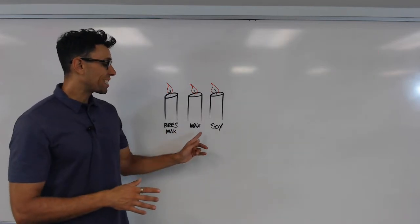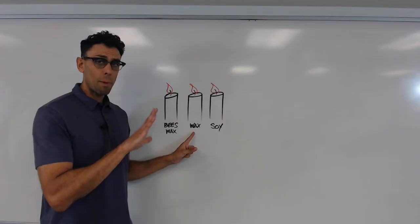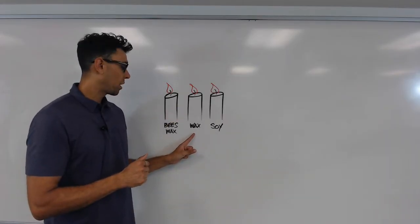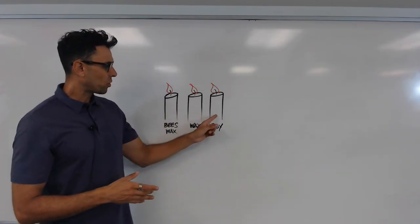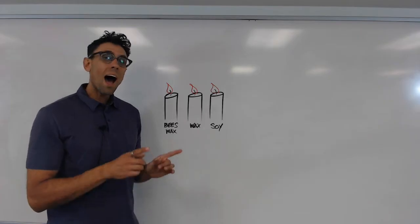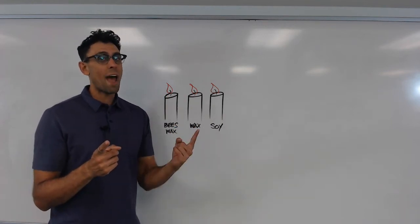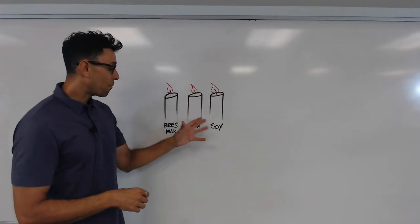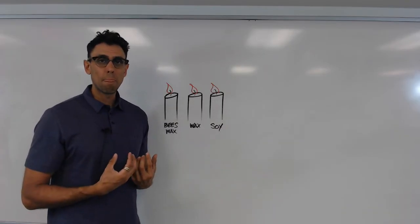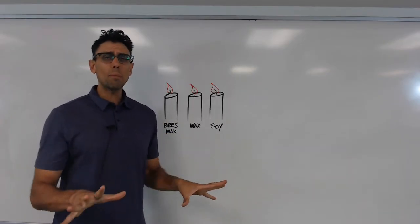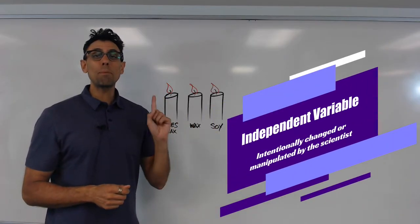I'm choosing three different materials to make my candles out of: one made of beeswax, one of normal wax or paraffin, and the third made of a wax product derived from soy. The three candles are made up of different substances — I changed the type of candles I'm using. Remember, to change is to vary, so this is a variable. The type of wax I'm using is one of the variables in this experiment.